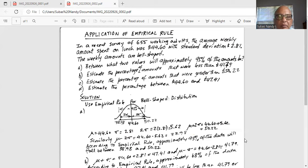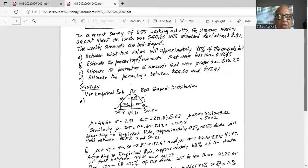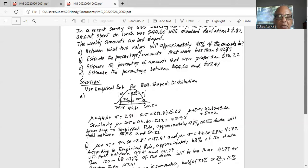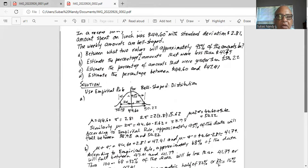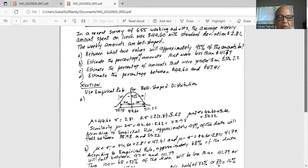So since the lunch amounts or the money spent on lunch are approximately bell-shaped, we will use the empirical rule for bell-shaped distribution. The mean is 44.60 and standard deviation is 2.81.